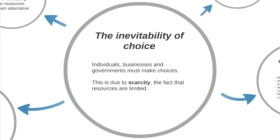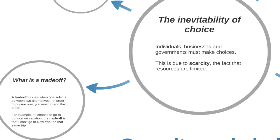In economics we assume that choice is inevitable — something faced by individuals, businesses, and governments — because due to scarcity, meaning resources are limited, we can't have everything we want. Government can't pursue every project they'd like; they have limited tax revenue. Individuals have limited time, and so do businesses. This concept of scarcity is fundamental to economics.